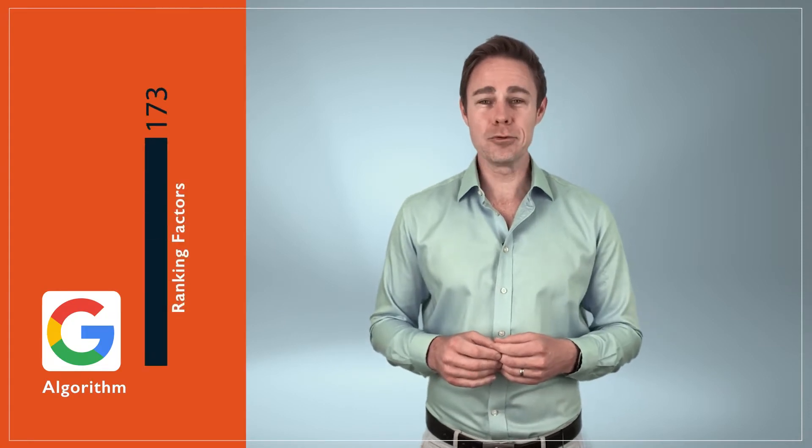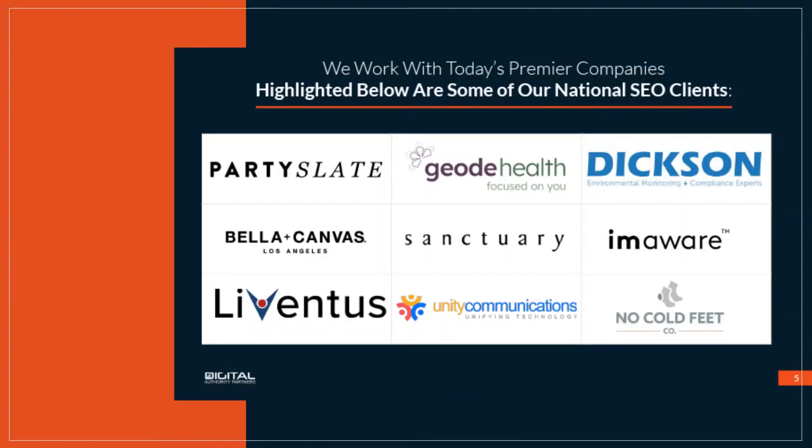Did you know that Google's algorithm includes over 200 ranking factors? 200 plus! But wait, I know that does sound daunting, but what if I told you that the majority of these optimizations can be made in less than a month by an expert technical SEO agency that has done this literally hundreds of times?